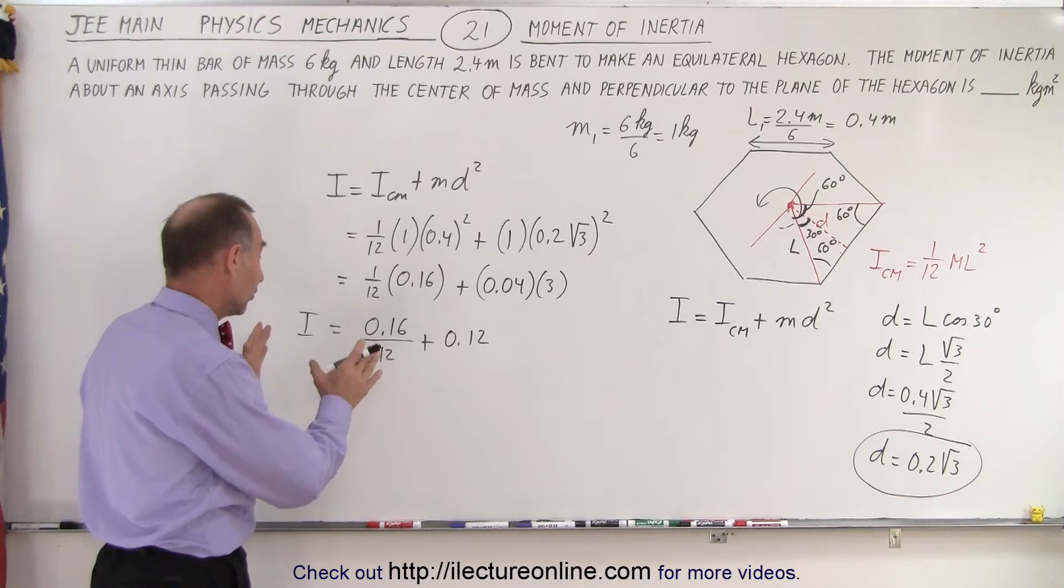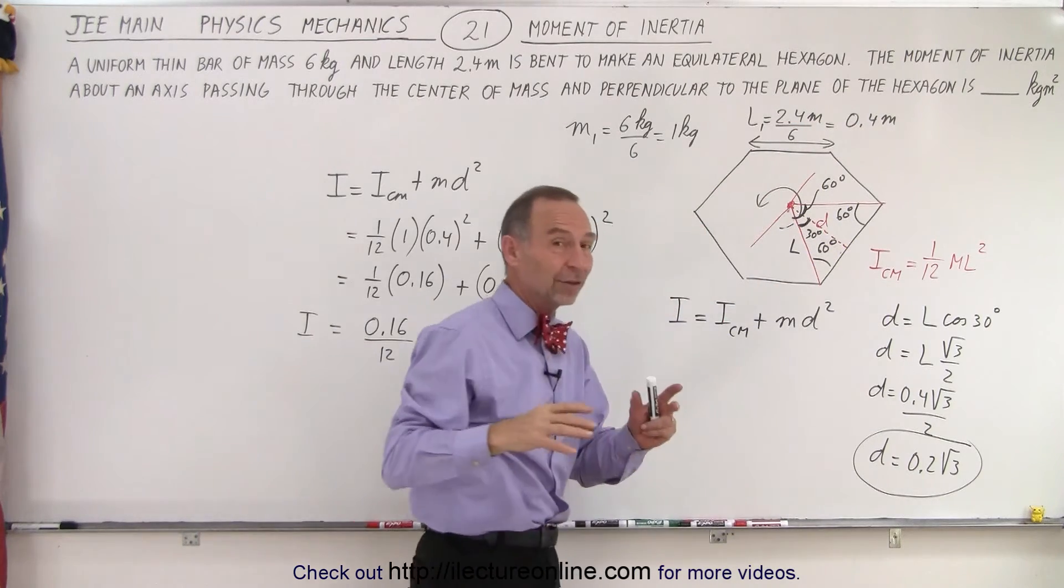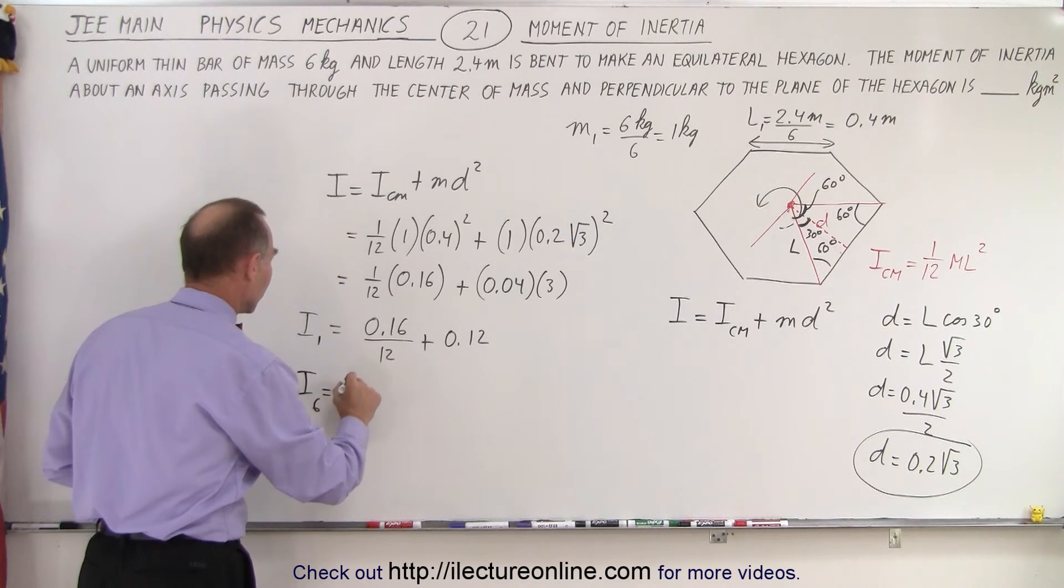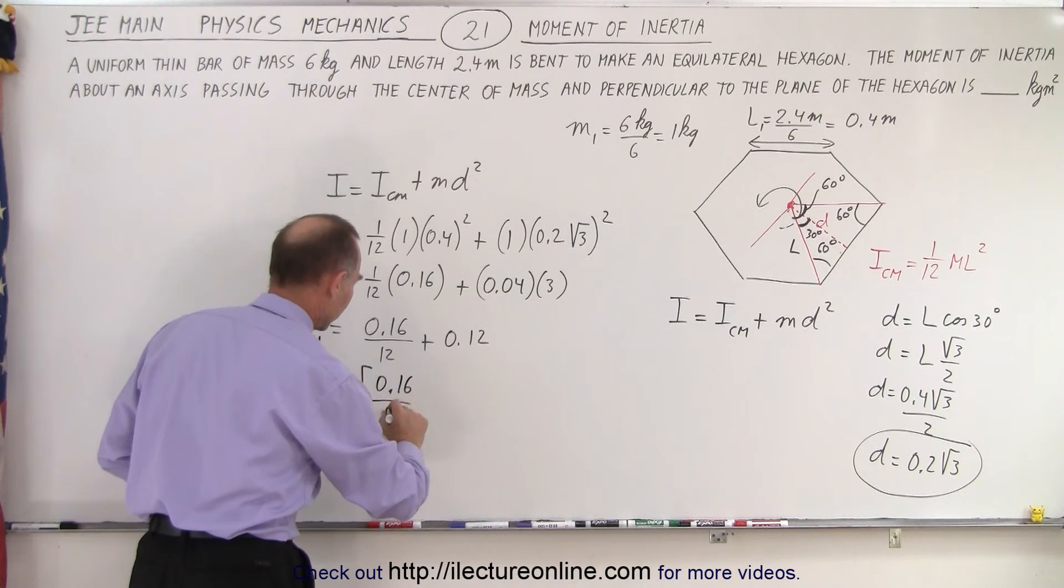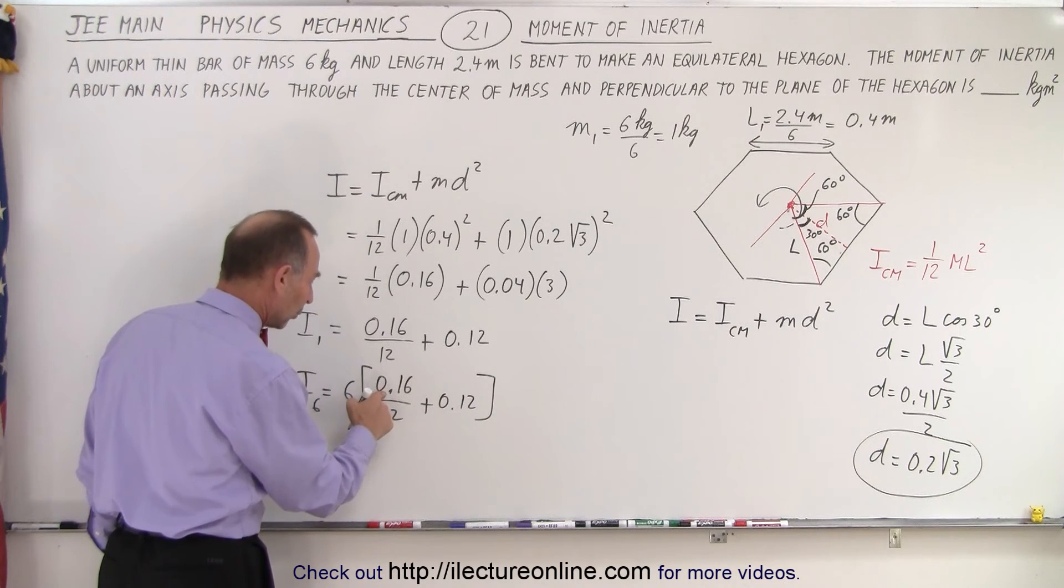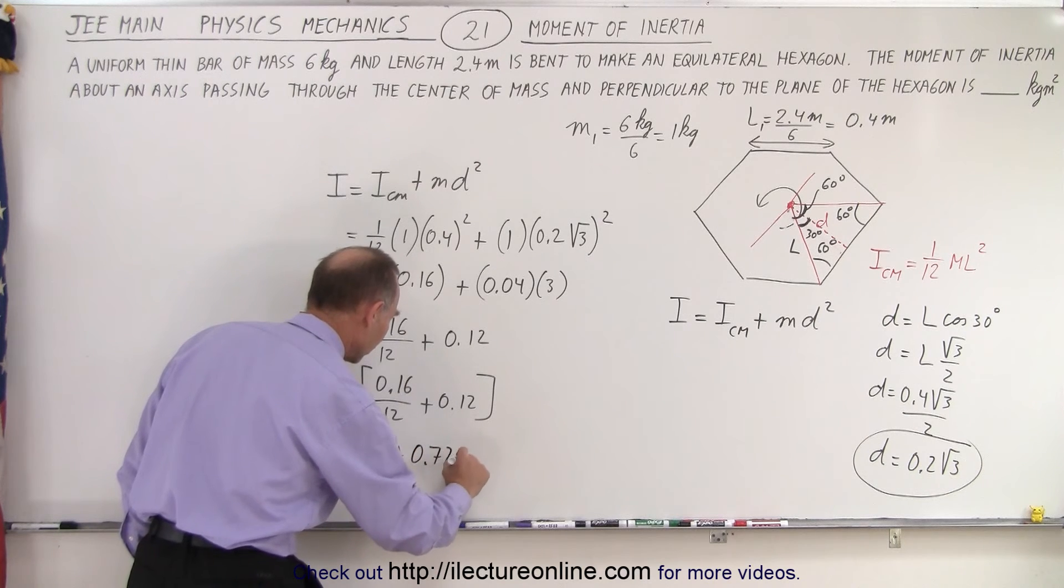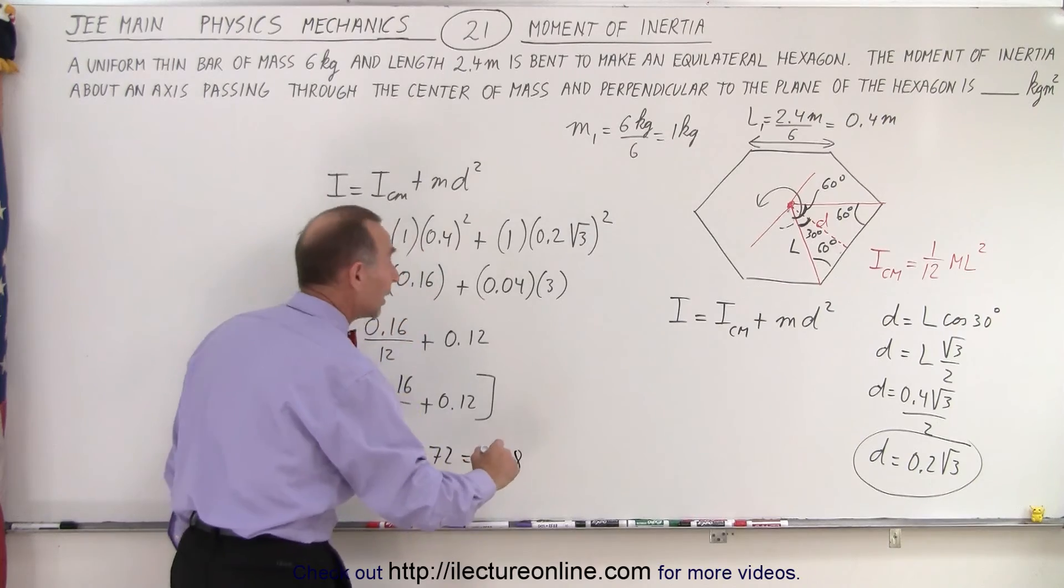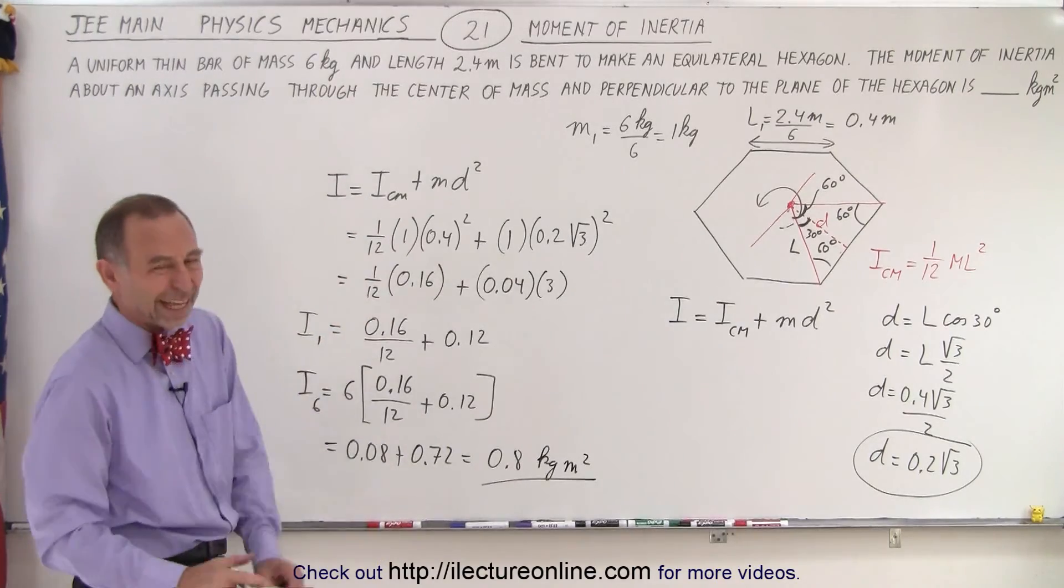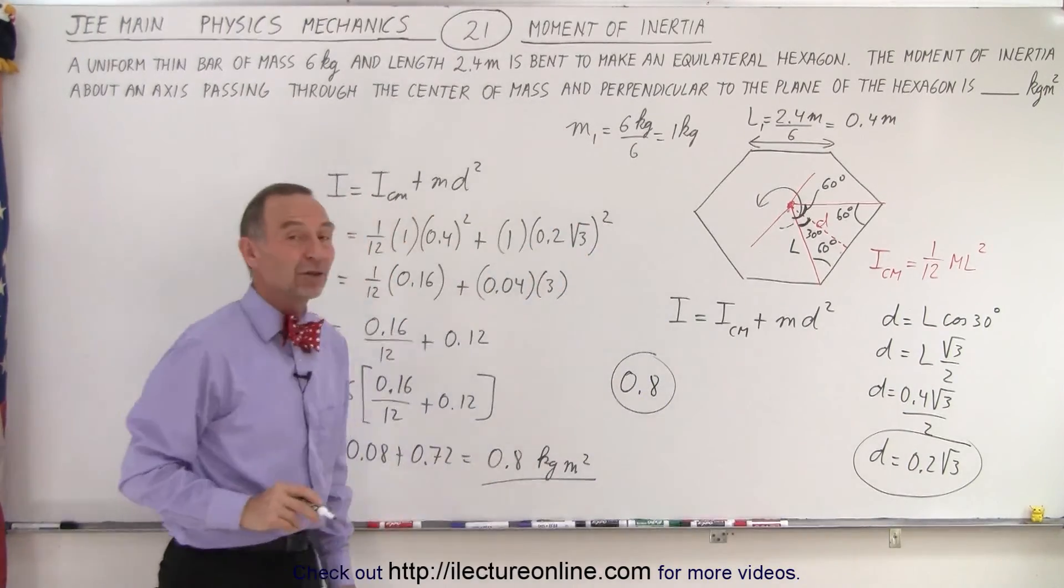So now what we did was we found the moment of inertia of just one of the sections of the hexagon. There's six of these sections, so to find the total moment of inertia we have to multiply the whole thing by six. So this is just for one of them. So when we want six of them, we're going to multiply this whole thing by six. So 0.16 divided by 12 plus 0.12 like this. So six divided by 12, that's one half. One half times 0.16 is equal to 0.08, plus six times 0.12, that would be 0.72. So this is equal to 0.8, and that would be kilograms meters squared. So notice I was looking for an integer - normally the answer is always integers, but in this case it's 0.8, 0.8 kilogram meters squared as a total moment of inertia.